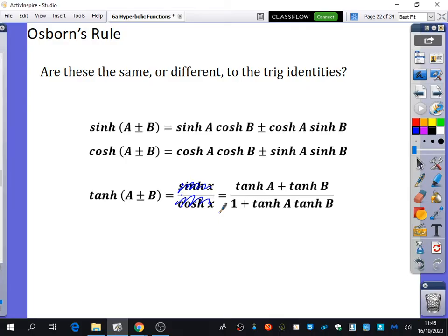And I think here, this should have been, this should have had a minus on the bottom, and this one also should have had a minus on the bottom. But now I've corrected those things, are these ones the same or different to the trig identities, and where are the similarities or the differences?